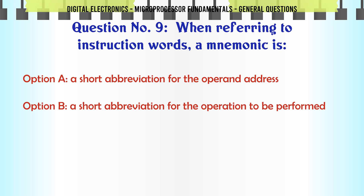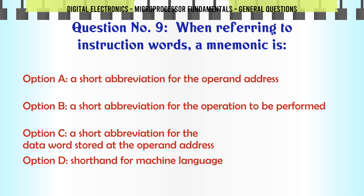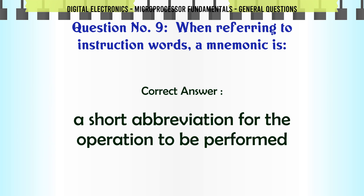When referring to instruction words, a mnemonic is: A. A short abbreviation for the operand address, B. A short abbreviation for the operation to be performed, C. A short abbreviation for the data word stored at the operand address, D. Shorthand for machine language. The correct answer is a short abbreviation for the operation to be performed.